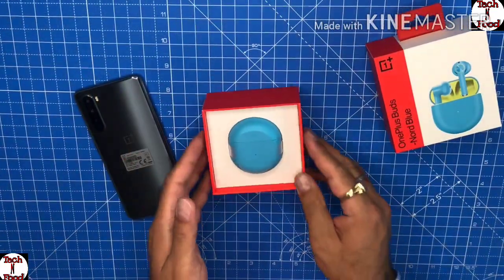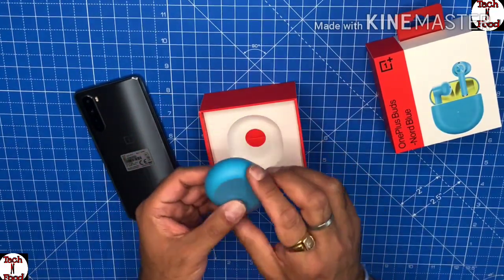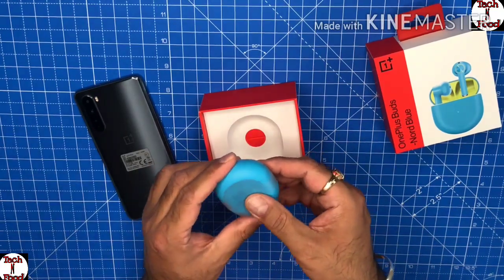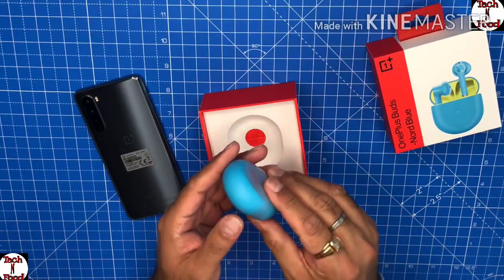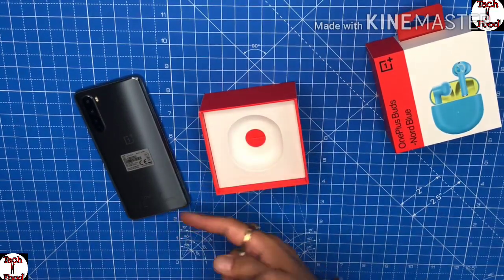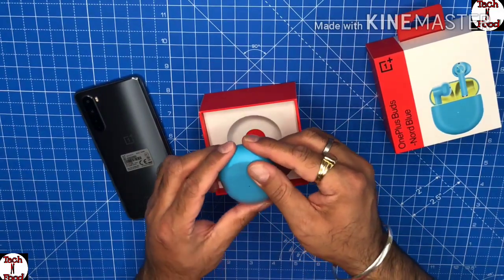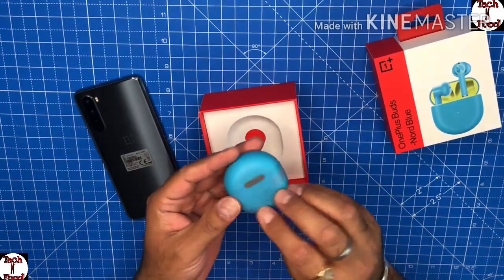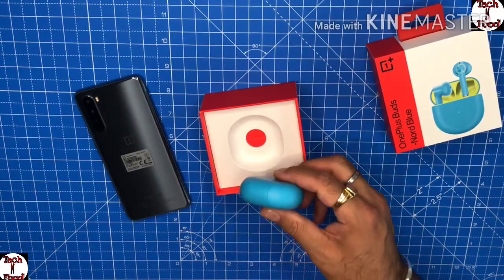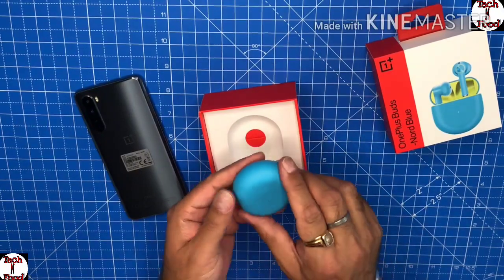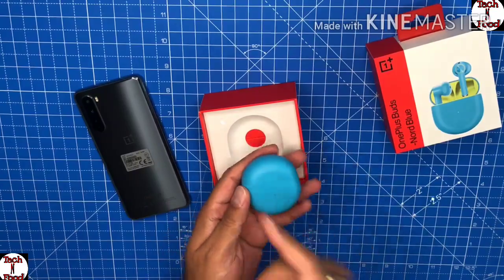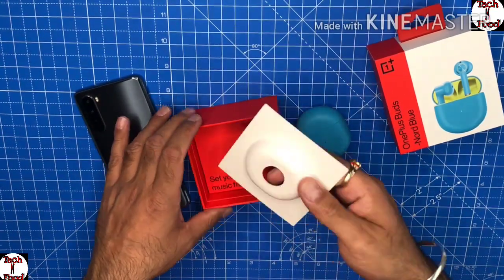By the look of it, they're very similar to Google Buds. The shape is very similar. Here in the UK, you get all three colors: the white, the blue marble, and the onyx gray. Let's see what else we get with this.